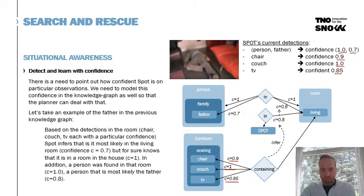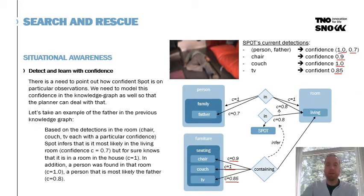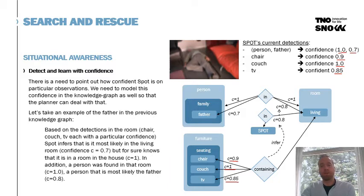Having a knowledge graph with all these confidence values is beneficial for the planner, because it can then decide whether it is effective to search and rescue in the living room, or whether it's not confident enough about a detected person and needs to send in a fireman, or needs to look more closely to identify whom it is looking at.